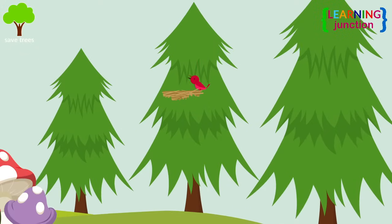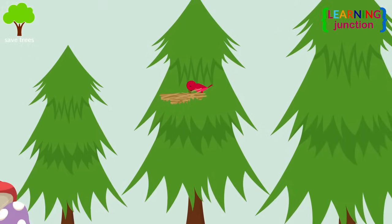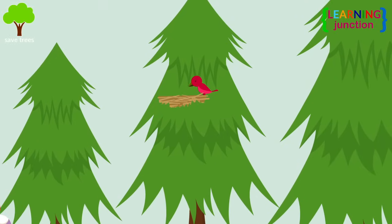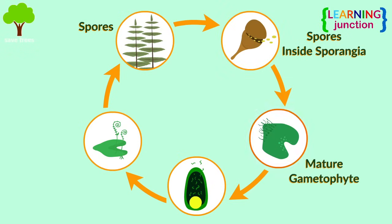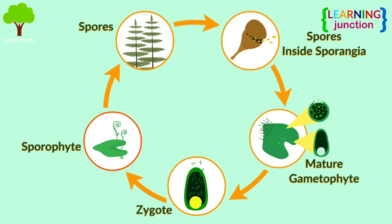Let's have a look at the life cycle of a non-flowering plant — the fern — which uses spores for reproduction. First, tiny spores start to appear on the leaves, forming on the undersides in spore cases called sporangia. In the second stage, the mature gametophyte produces both male and female gametes. Then the zygote develops, containing a complete set of DNA to form a new fern plant. The final stage is the sporophyte — it grows and releases spores, and then the life cycle starts again.